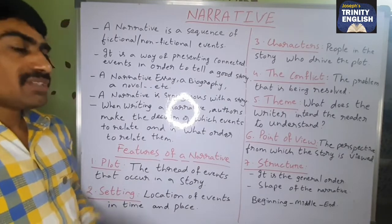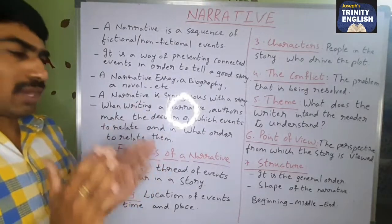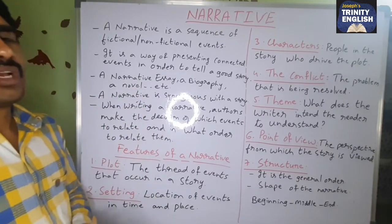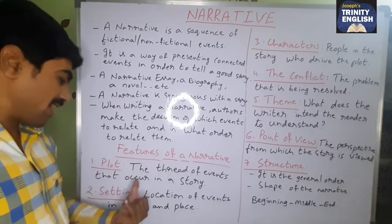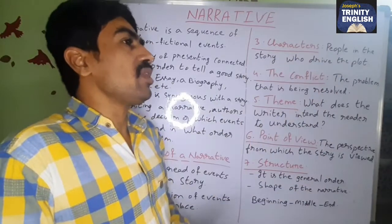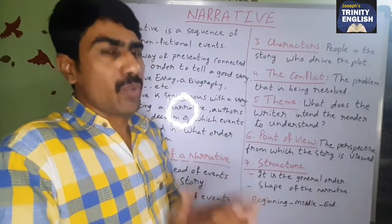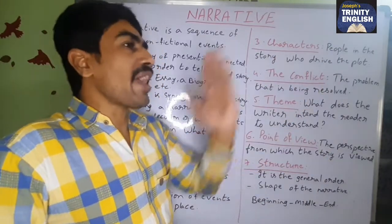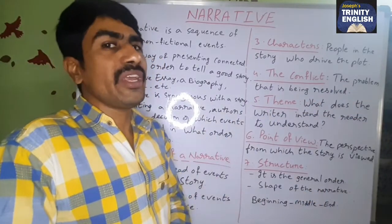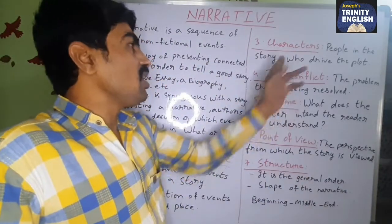The next feature is setting. Setting is the location of events in time and place — in what place and at what time the events occurred. The third feature is characters. Characters are the people, animals, or things in the story who drive the plot forward. As mentioned in story writing, we have two types of characters: major characters and minor characters.